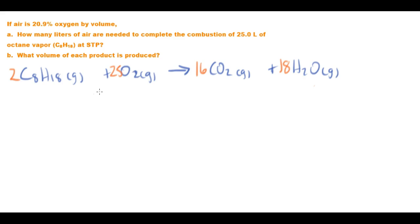So first and foremost we know that the volume of our C8H18 is 25 liters, 25.0 liters of our octane. So in order to figure out how much, first off, oxygen we have, let's find out.